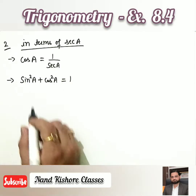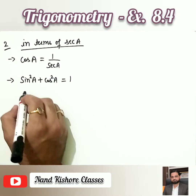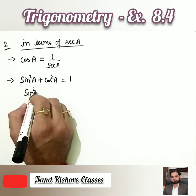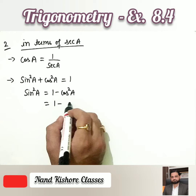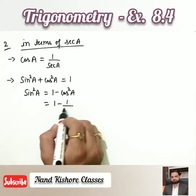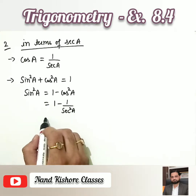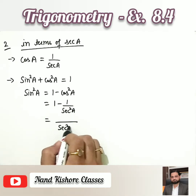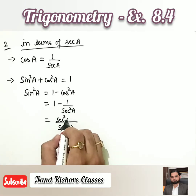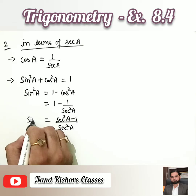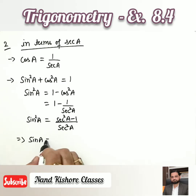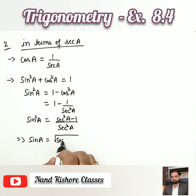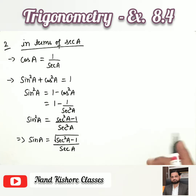Using sin²A + cos²A = 1, and substituting cos A = 1/sec A, we move cos²A to the right side: sin²A = 1 − 1/sec²A. Taking sec²A as LCM gives sin²A = (sec²A − 1)/sec²A. Taking square root on both sides: sin A = √(sec²A − 1)/sec A.